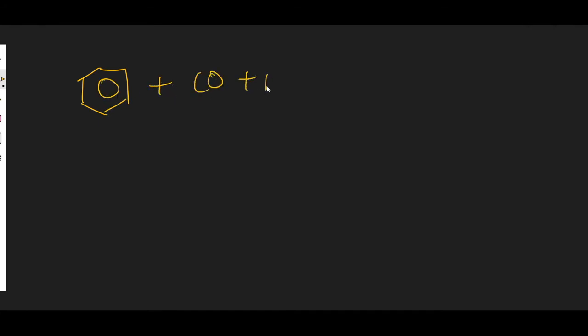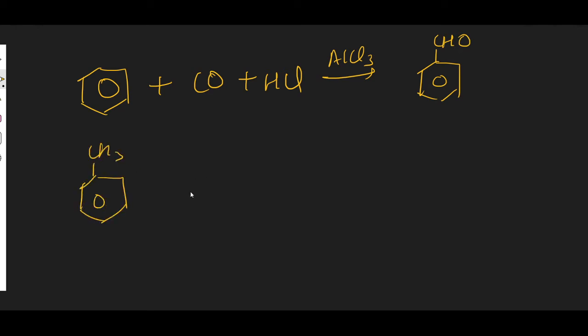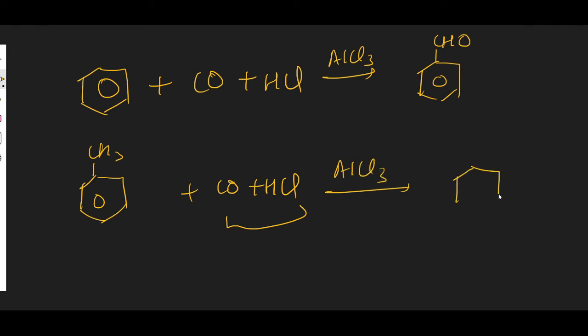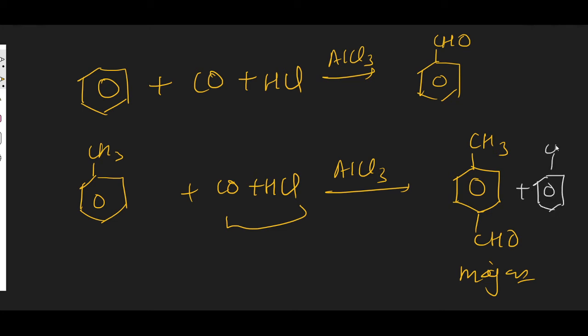In the Gattermann-Koch reaction, benzene or alkyl benzene is reacted with carbon monoxide and hydrochloric acid. The para product is the major isomer, while the ortho product is the minor isomer.